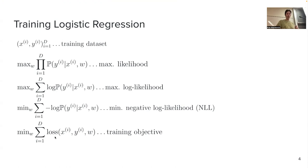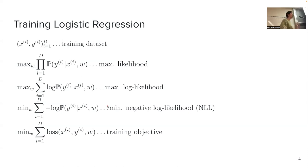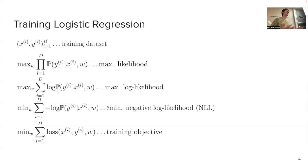This equation is what we call minimizing negative log likelihood — NLL. This is a super important term. Once we start using deep learning libraries like PyTorch, there will be a function called NLL, and no one will explain what it means — it's assumed you know. Minimizing negative log likelihood is a mega-important concept in machine learning.